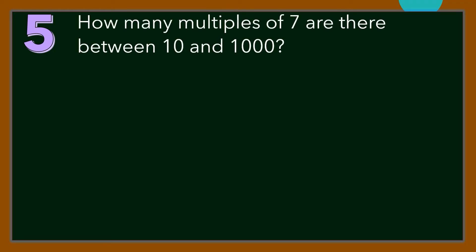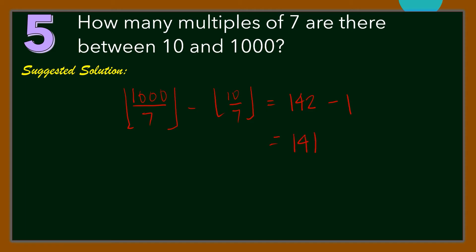Number 5: How many multiples of 7 are there between 10 and 1,000? For our solution, we use the floor function or integer division. We compute floor of 1,000 over 7 minus floor of 10 over 7, which is 142 minus 1. Hence, there are 141 multiples of 7 between 10 and 1,000.